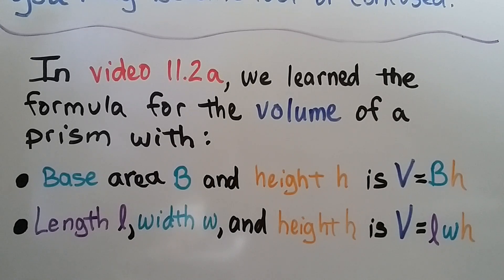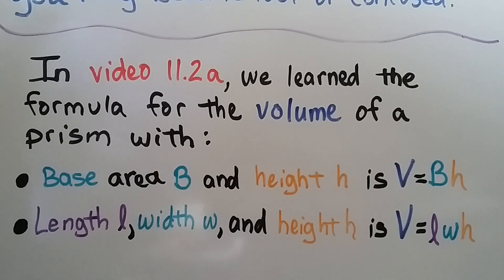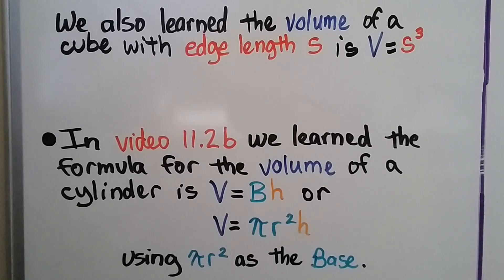In video 11.2a we learned the formula for the volume of a prism with base area B and height H: volume equals base times height. The formula for the volume of a prism with length L, width W, and height H is volume equals length times width times height. We also learned the volume of a cube with edge length s is volume equals s cubed.